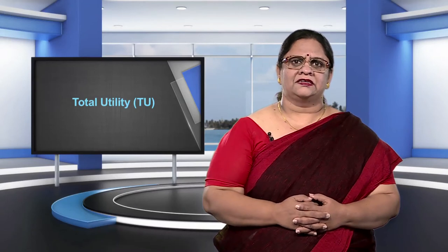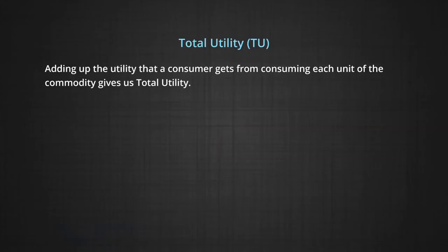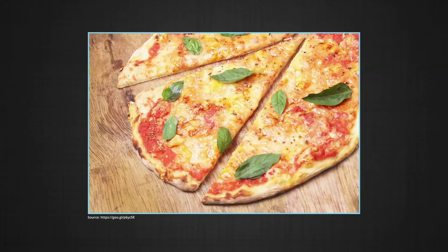We believe that the consumer's utility generally increases from consuming more and more of a commodity. Adding up the utility that a consumer gets from consuming each unit of the commodity that she buys gives us total utility. Imagine that you want to have pizza. The intensity of wanting pizza is so high that the first bite into it makes you say wow. Typically, as you go on having more and more pizza, you begin to feel full. So each extra bite gives you less satisfaction than the one before.